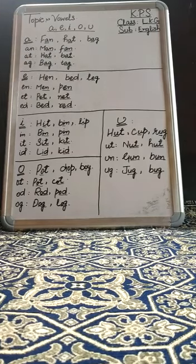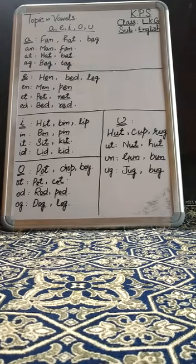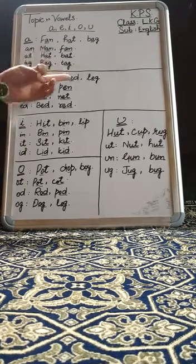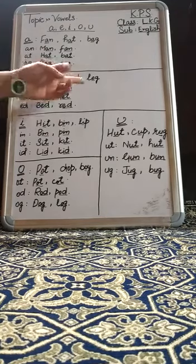Now the second vowel is E. The sound of vowel E is 'Eh'. Here are some words with the vowel E: Hen, Bat, Leg.